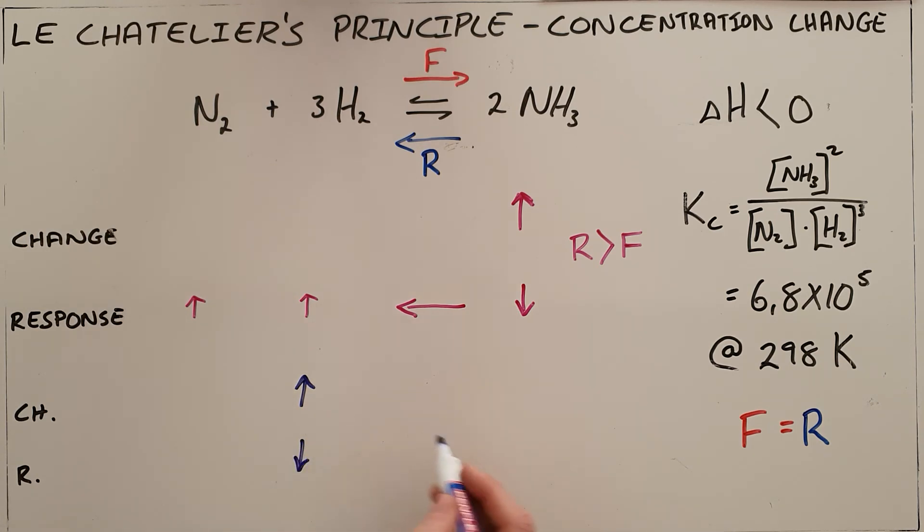In doing that, it must favor the direction that uses up what I have added, which in this case is favoring the forward direction which uses up nitrogen and hydrogen and produces ammonia. So for this brief period of time, the forward reaction is proceeding at a faster rate than the reverse reaction, once again until equilibrium is re-established at which point the forward reaction rate is equal to the reverse reaction rate.